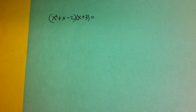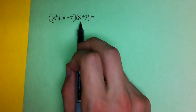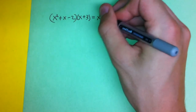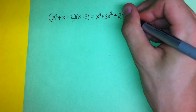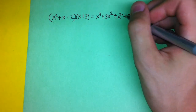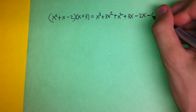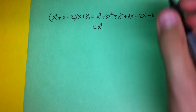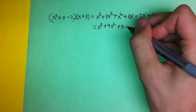This final problem is a little bit more tricky because you can't use FOIL, so we're just going to use the method of multiplying the first term in the first expression by all the terms in the second expression, then moving on to the second term, and so on. We have x squared times x and x squared times 3, which gives x cubed plus 3x squared. Then with x, we have x times x which is x squared, and x times 3 which is 3x. Moving on to negative 2, we have negative 2 times x which is minus 2x, and negative 2 times 3 which is minus 6. That simplifies to x cubed plus 4x squared plus x minus 6.